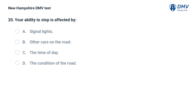Your ability to stop is affected by: A) signal lights, B) other cars on the road, C) the time of day, D) the condition of the road.